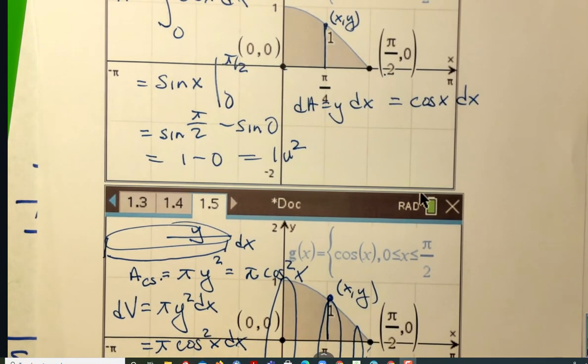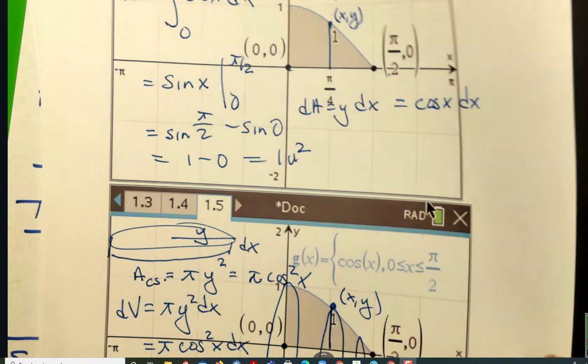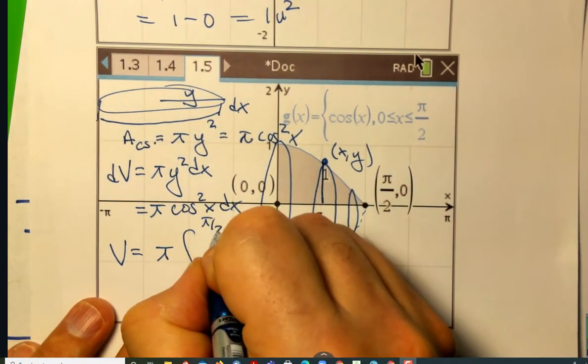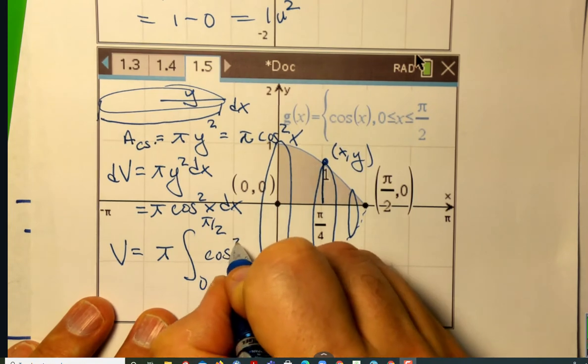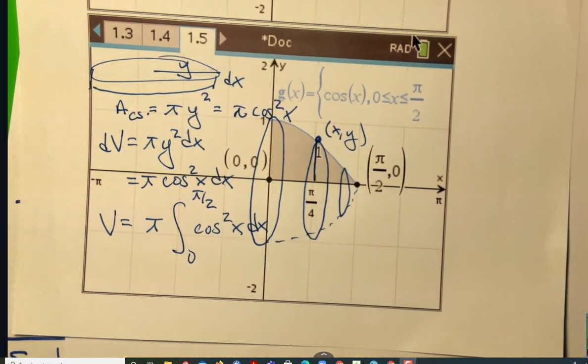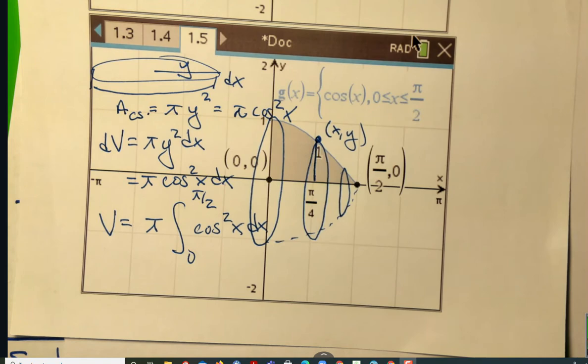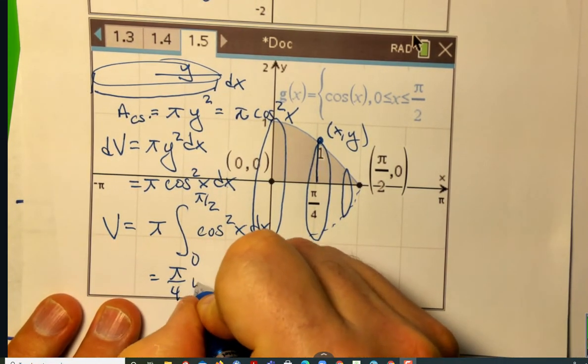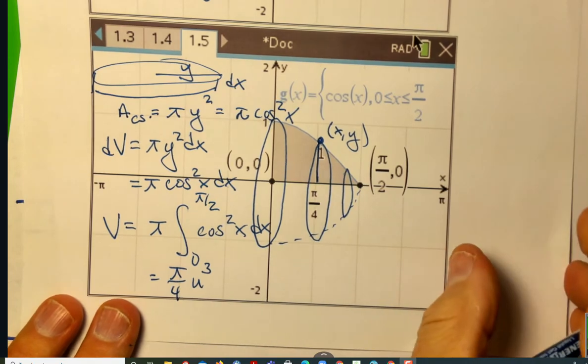Now, AP, all my AB students, you should be able to at least set up this integral. BC students, you're expected not only to set this up, and I expect my AB students to do this too. I expect you to do it by hand. So now you can use a calculator, and you can come up with this. So when we're done, this will be pi over 4 cubic units. Notice I said when we're done.